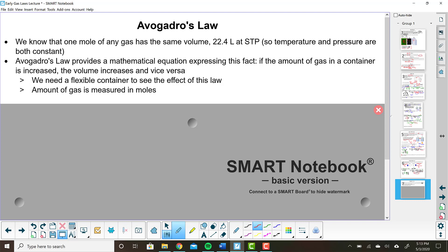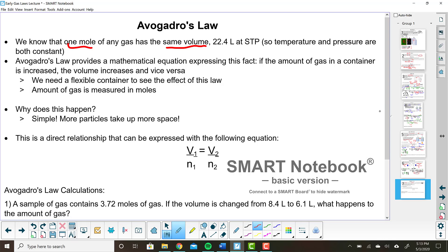Avogadro's law says that if the amount of gas in a container is increased, the volume increases, because at any one time, one mole has to have the same volume. So if we increase the volume, then we must also be increasing the number of moles. But we have to make sure that we have a flexible container to see this law. And, you know, this makes perfect sense. We've got more particles that take up more space. So we have, again, a direct relationship. We've got volume and number of moles. As one goes up, the other one goes up. More particles take up more space.